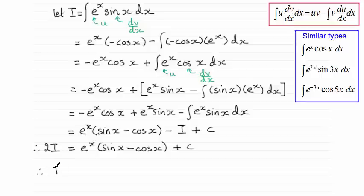So we end up with I equaling this term divided by 2. So that's e to the x over 2, or half e to the x, multiplied with all of sine x minus cosine x, and then half this constant. So I've either got c over 2, or I could just call it another constant. I'll just call it a. Okay.